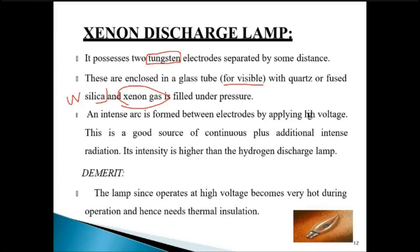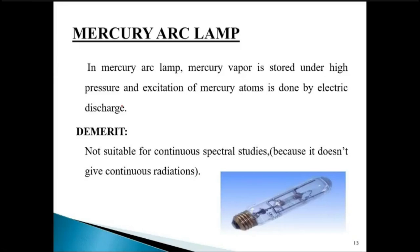A demerit of the xenon discharge lamp is that since it operates at high voltage, it becomes very hot during operation and hence needs thermal insulation. This is also true for the hydrogen discharge lamp. Next is the mercury arc lamp — the name suggests we are going to use mercury and there is arc formation within the lamp.